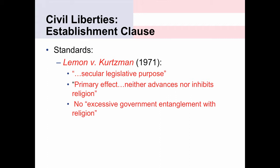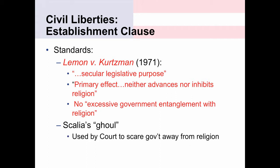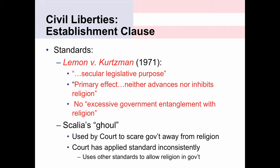This last one is controversial because it is somewhat ambiguous, and the Supreme Court, people have argued, have used the ambiguity of that language to create inconsistent rulings. Famously, Justice Antonin Scalia referred to the Lemon Test as a ghoul, saying it's a test that the Supreme Court keeps in the closet and will pull out whenever they want to scare government away from religion. The reality is that the court has applied the standard inconsistently. It does not apply the standard to every case involving government and religious expressions. In some cases, they've used other standards that have allowed religion in government.